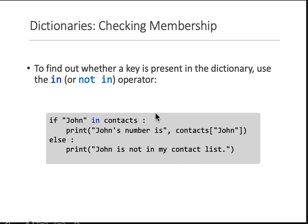To find whether a key is present in a dictionary or not, you can use the 'in' keyword. If this given key is in this dictionary, do something — go and retrieve its value. Otherwise, show another message.